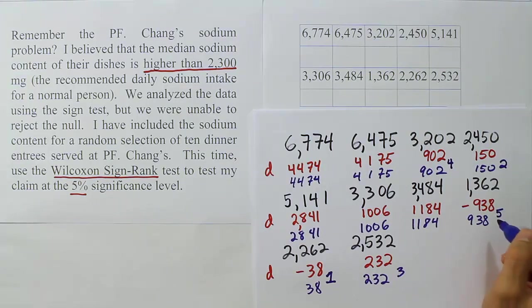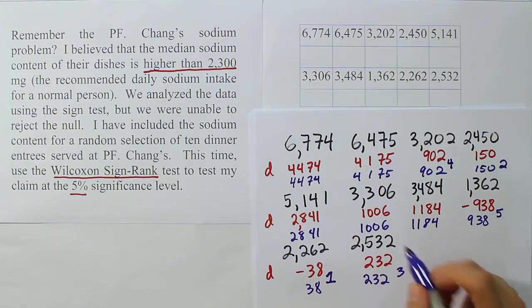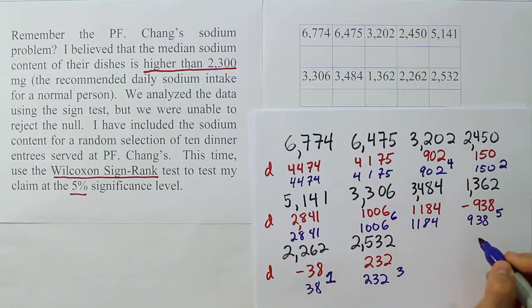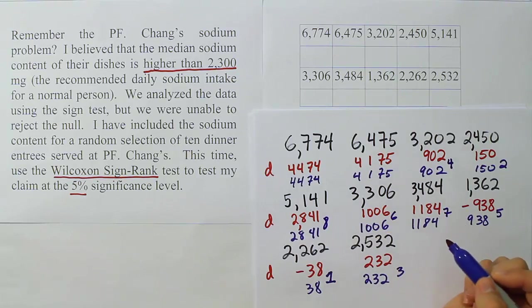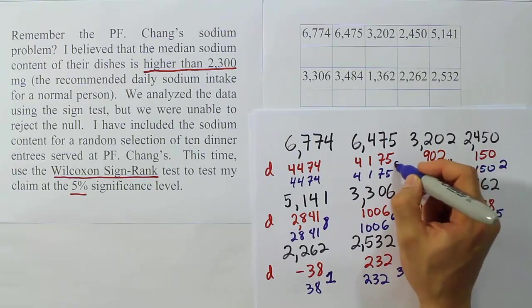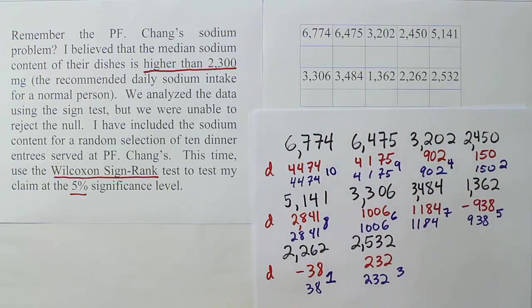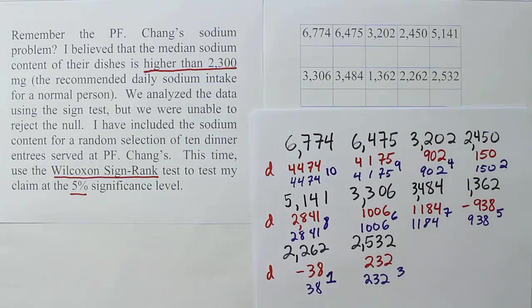Then we'll have 1006 maybe is the next smallest, that's six. And then this will be seven, and then eight, and then nine and ten. So there's all our ranks filled in. There were no ties, so it's nice and easy.